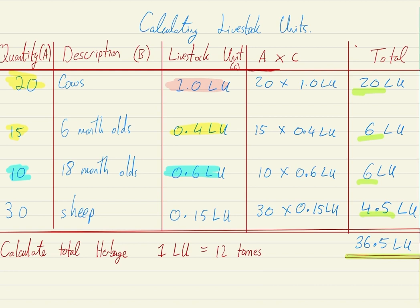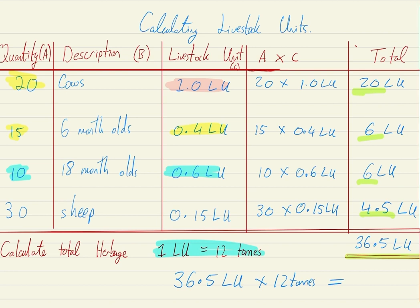Sometimes in the exam you can be asked how many tons of herbage you need for your farm. Each livestock unit requires 12 tons of herbage, so to calculate the amount of herbage required you multiply 36.5 livestock units by 12 tons. That gives us a total of 438 tons of herbage.